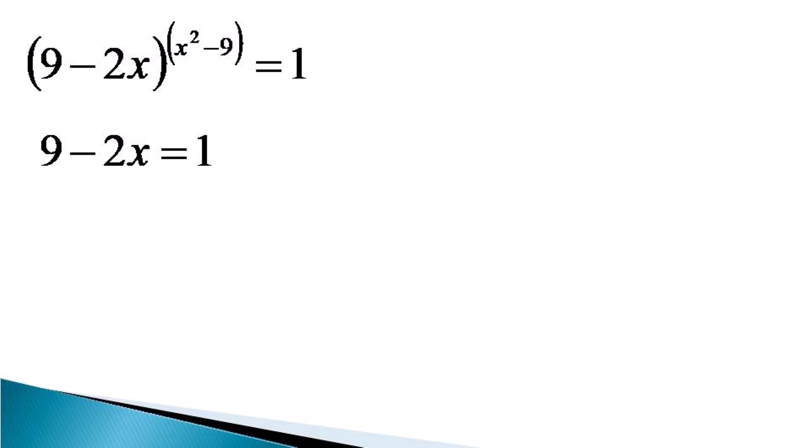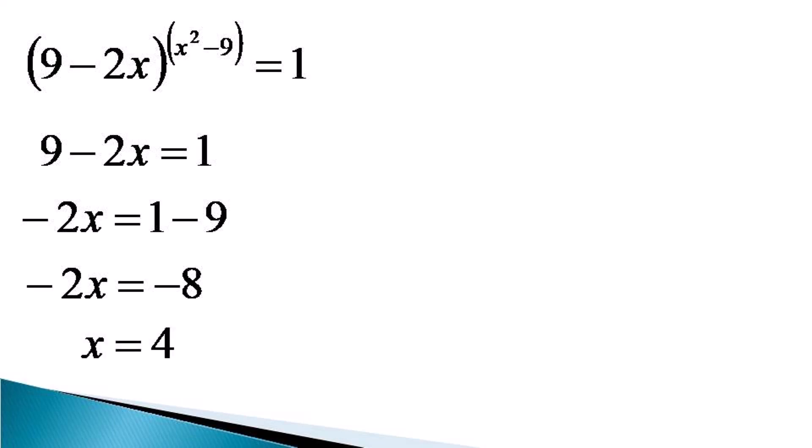So we solve this equation to get: minus 2x equals 1 minus 9, which gives minus 2x equals minus 8, or simply x equals 4. So this is the first solution of the equation.